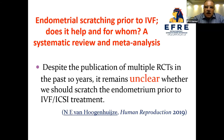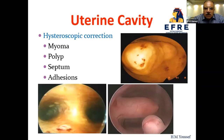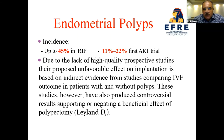Everyone agrees that any intrauterine lesion — myoma, polyp, septum, adhesion — should be corrected before attempting another cycle. The incidence of endometrial polyps is up to 45 percent in RIF patients and about 20 percent after the first failed trial. Due to lack of high-quality prospective studies, their proposed unfavorable effect on implantation is based on indirect evidence, and studies have produced controversial results both supporting and negating a beneficial effect of correction.